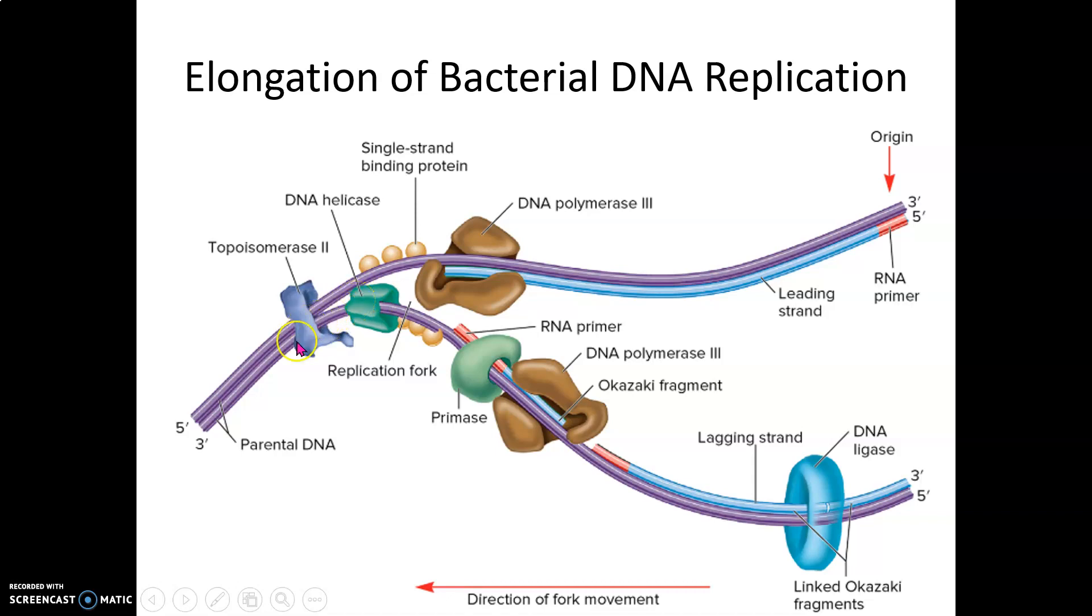Ahead of the fork, topoisomerase cuts the positive supercoils and introduces negative supercoils, unwinding those positive supercoils.